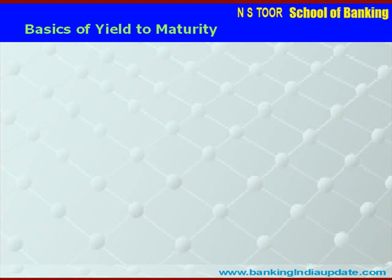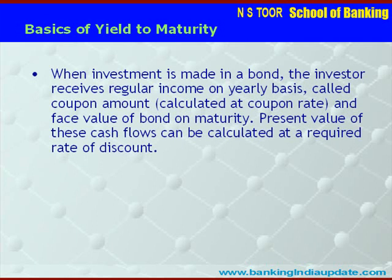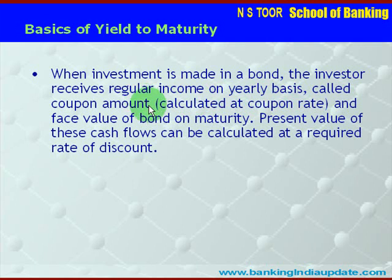Before understanding the concept of Yield to Maturity, we must understand the basics of investment in bonds. Whenever investment is made in a bond, the investor gets two things: one, regular income on a yearly basis which is called the coupon amount, calculated at the given coupon interest rate. In addition, the investor also receives the face value of the bond on maturity.